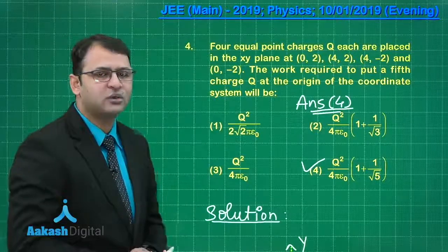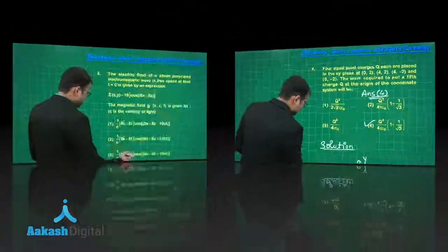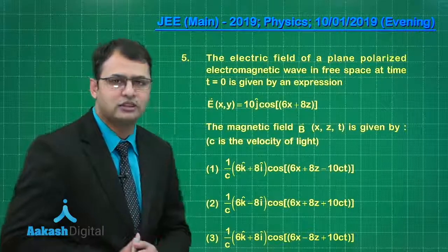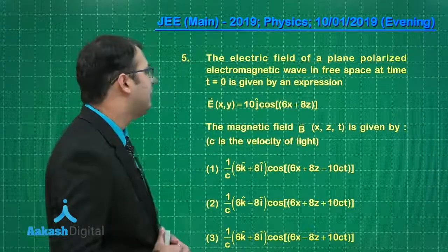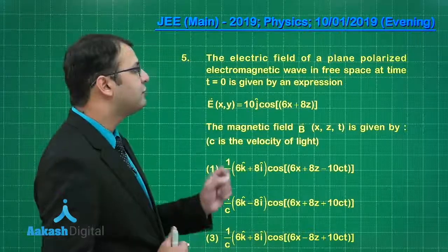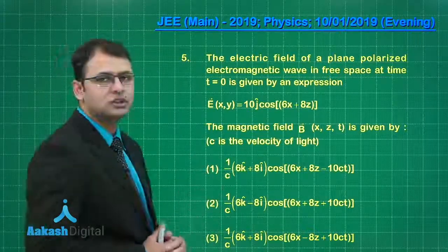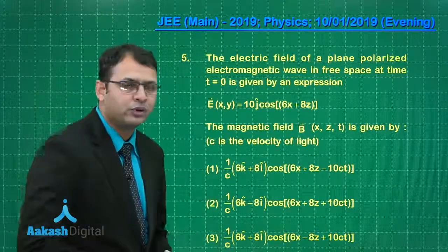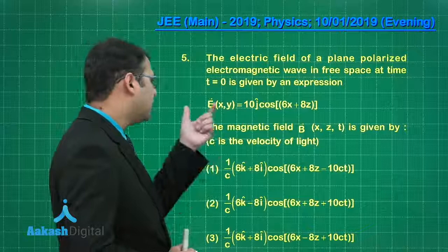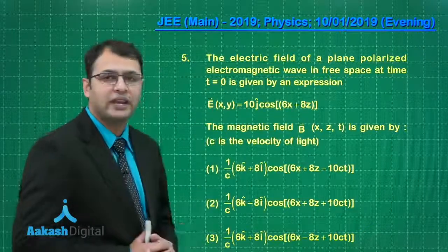Let's move ahead to question number 5. The question belongs to electromagnetism, topic electromagnetic wave. The electric field of a plane polarized electromagnetic wave in free space at time t equals 0 is given by this expression. We have to find the magnetic field.